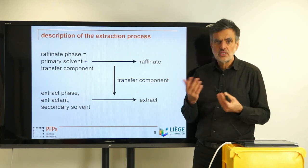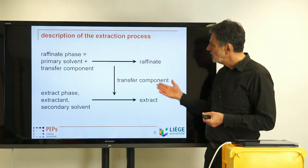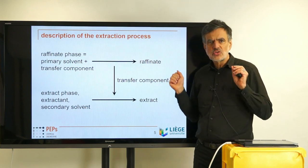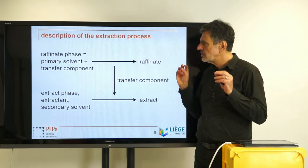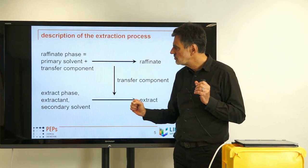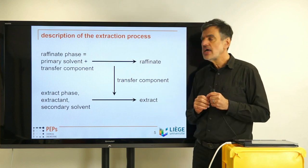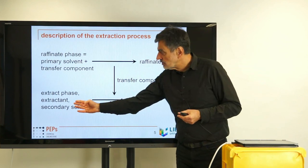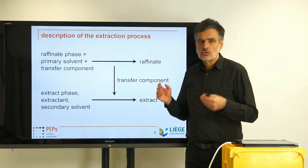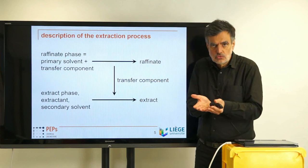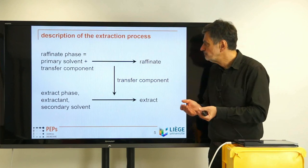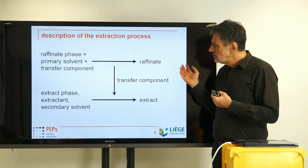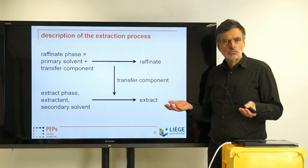In that kitchen example, the transfer component would be the red color of the tomatoes. The primary and secondary solvent terminology is a technical description to make things clear: the primary solvent first contains the transfer component; you add the secondary solvent and then the transfer component is transferred from primary to secondary solvent, so that you wind up with raffinate and extract. The extractant is often also called extract phase, and the raffinate phase is often just called the feed.